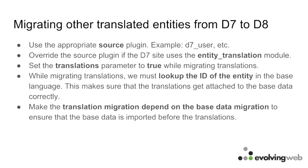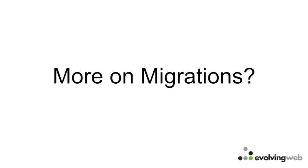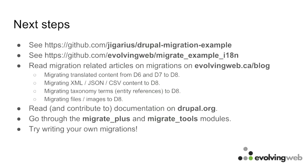This brings us to the end of the main topic. For migrating other entity types, the approach is the same: first get the base data, then get the translations in a separate migration. You can visit evolvingweb.ca where I now have more than eight articles on migrations. You can read them and leave comments if you have any questions.